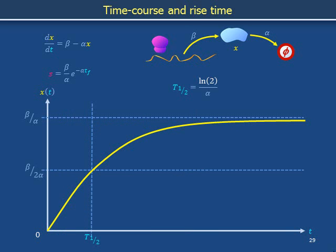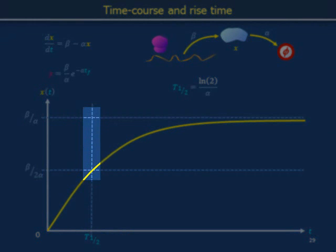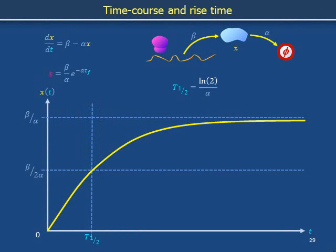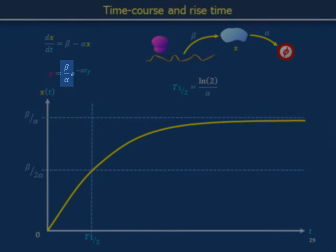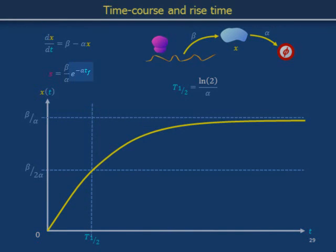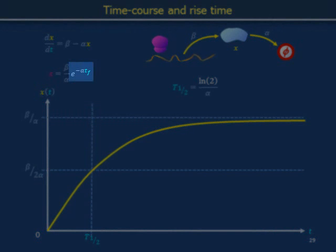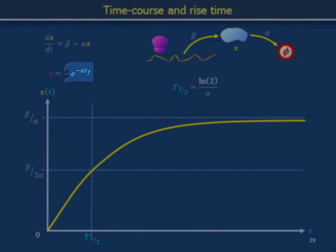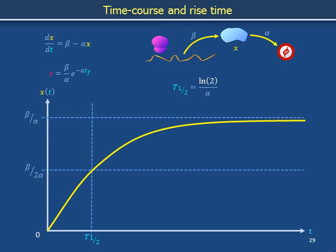The time at which the yellow curve is halfway to its steady state is also the time when s, the vertical separation between the yellow curve and the steady state, is half its original maximum value. The scaling of s is beta over alpha, but the shape with which it changes through time is described by e to the minus alpha tf. This function of time is parametrized only by alpha, not by beta.